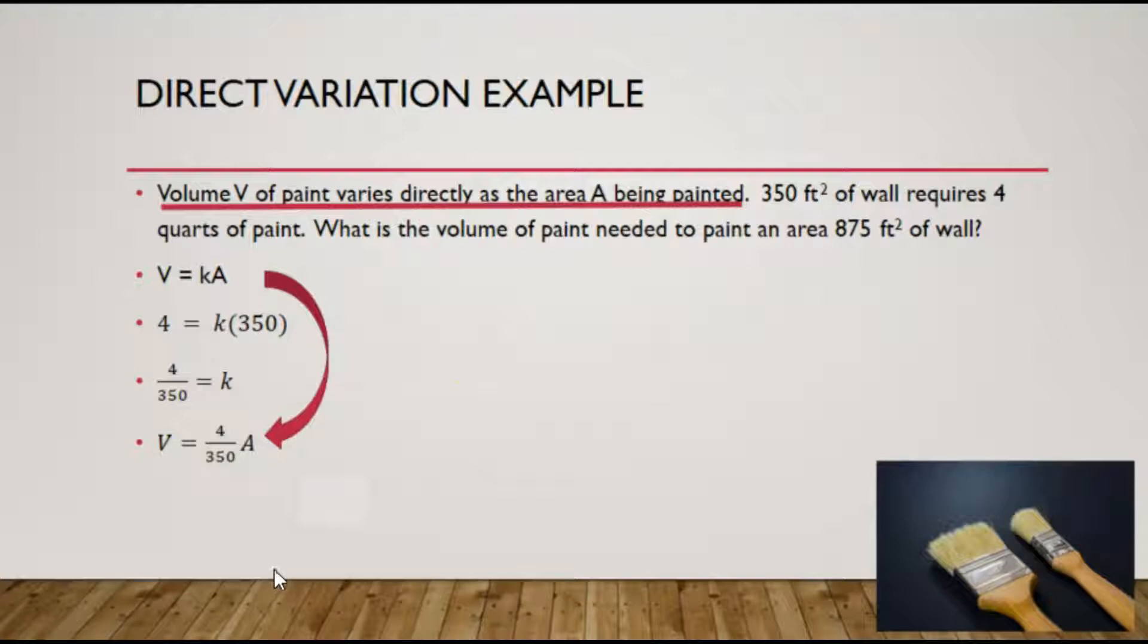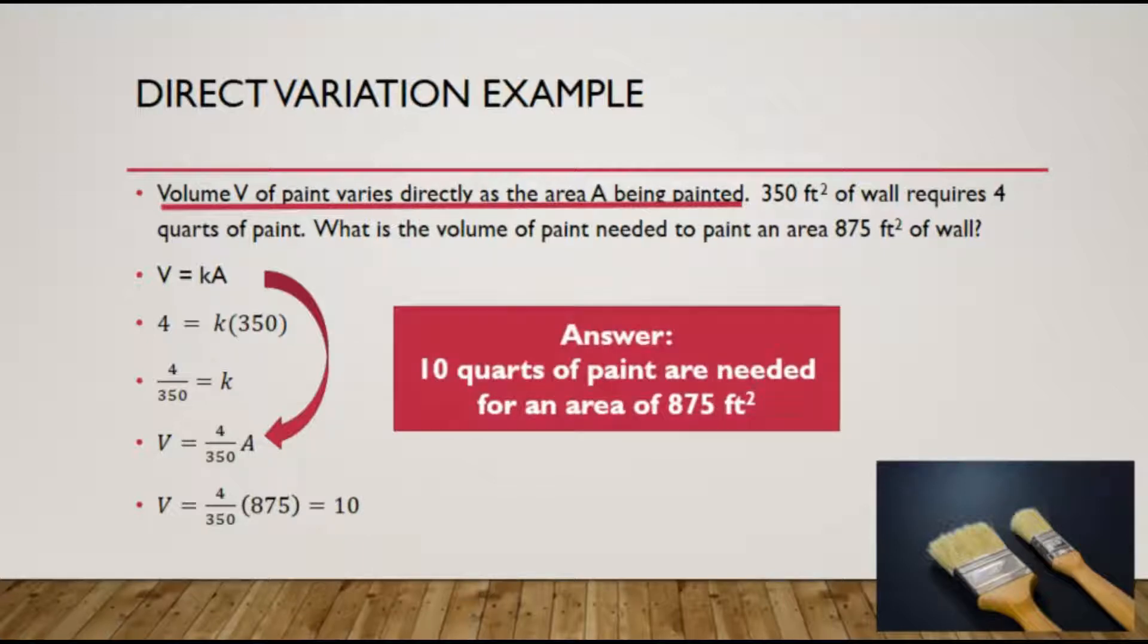We can then go ahead and answer the question, what is the volume of paint needed with an area of 875? So in place of A, we will replace it with the 875, simplify the multiplication, and find that the volume is equal to 10, giving us the answer of 10 quarts of paint are needed for an area of 875 square feet.